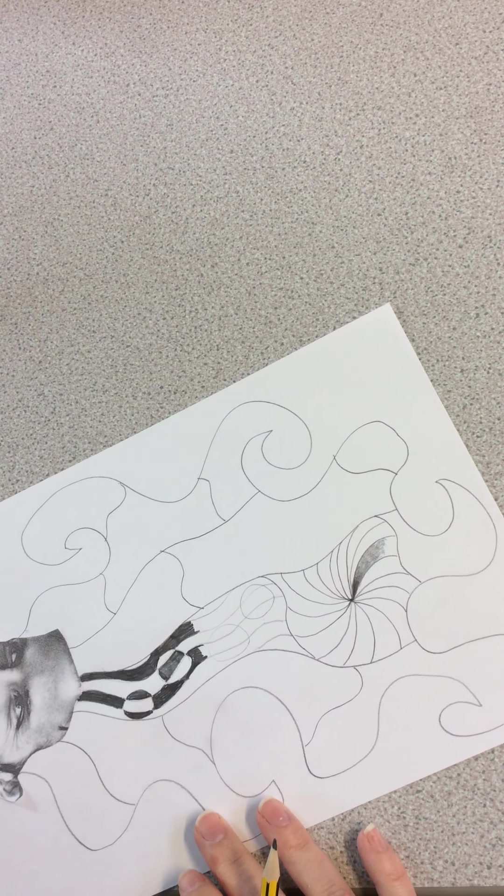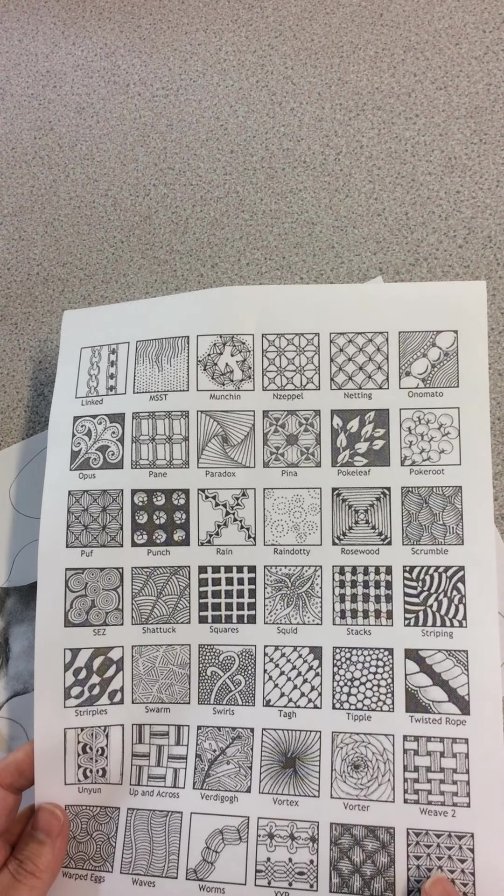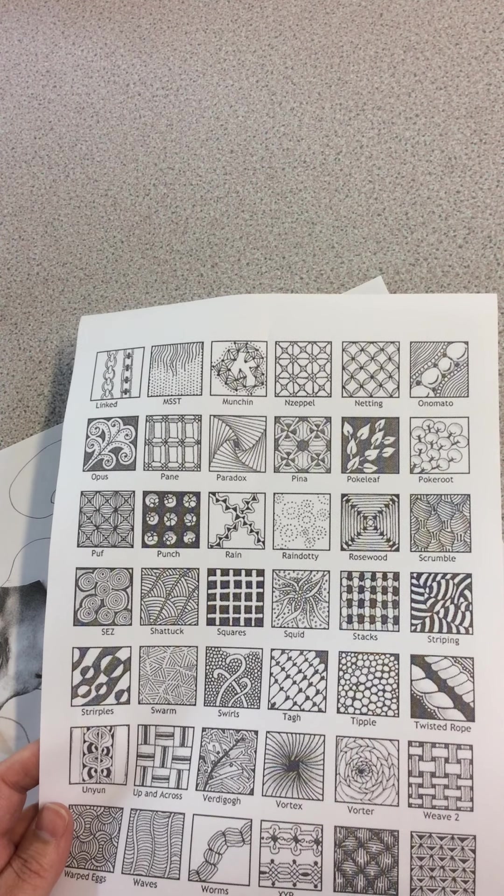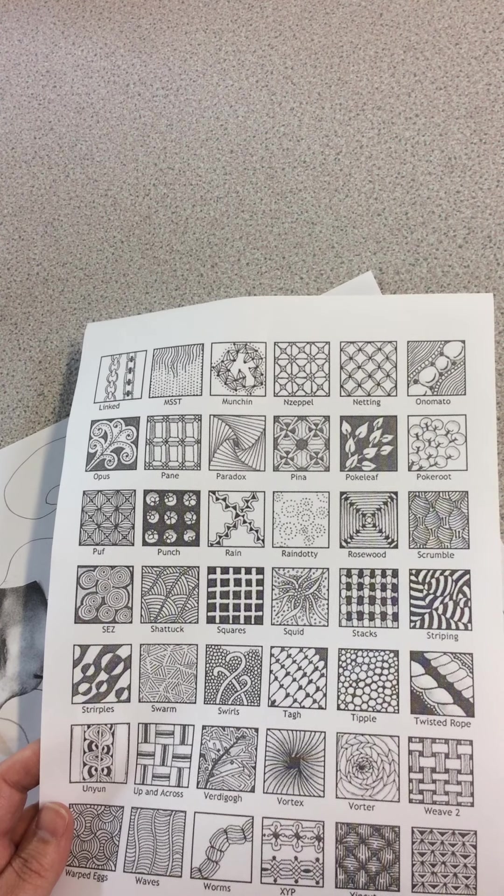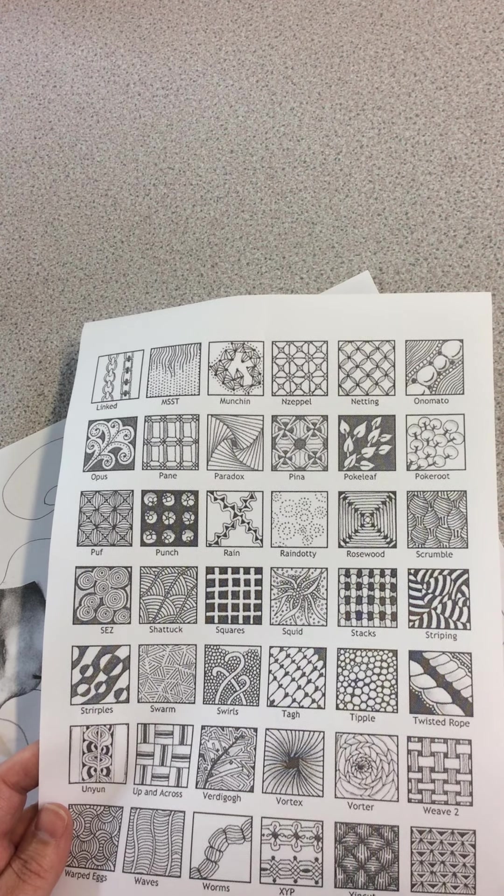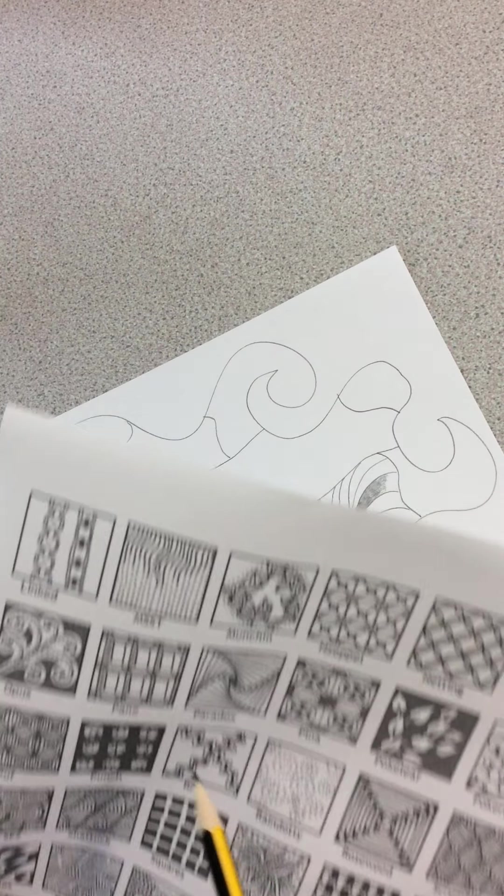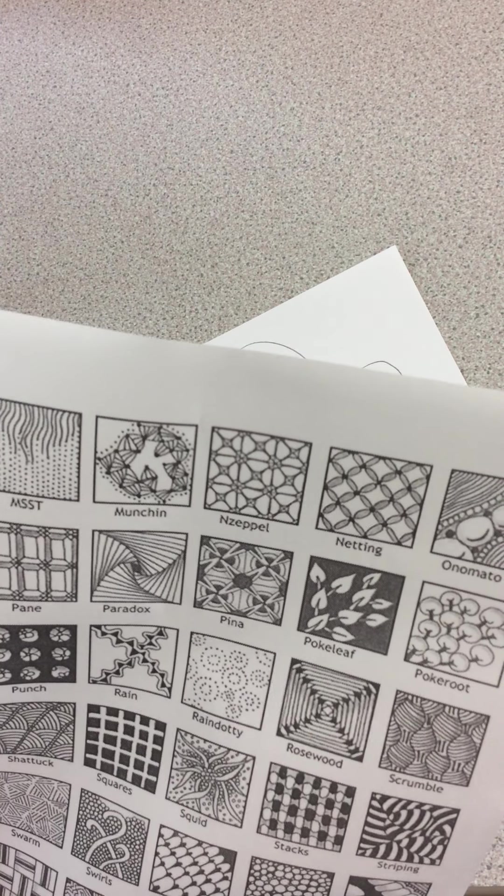So what I want you to do is I want you to have a look on the board and I want you to select whichever patterns you wish. Try to mimic and copy the first few at least till you get into the swing of things and then if you want to put your own twist on them that's fine. Can I just say though, if you select a pattern such as rain, dotty, or mist up here or ones that have lots and lots of tiny tiny circles in them